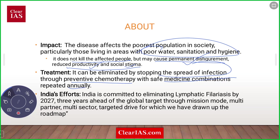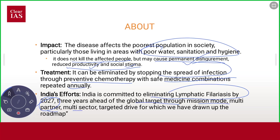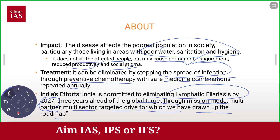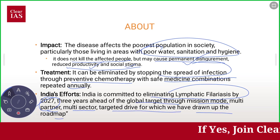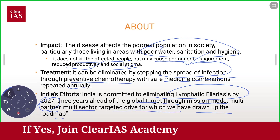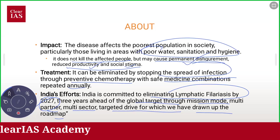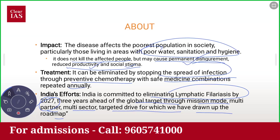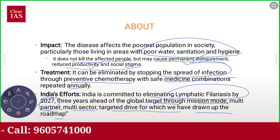Considering India's efforts, India is committed to eliminating lymphatic filariasis by 2027, which is three years ahead of the global target. This is being pursued through a mission-mode, multi-partner, multi-sector targeted drive with a drawn-up roadmap. Globally, the target is to eliminate it by 2030, but India's target is 2027.